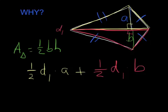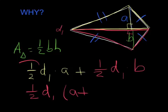And I'm going to use an algebra rule where I'm going to factor out 1/2 and diagonal 1. What's left from the first term, once I factor that out, is an A. And what's left from the second term, after I factor that out, is a B.